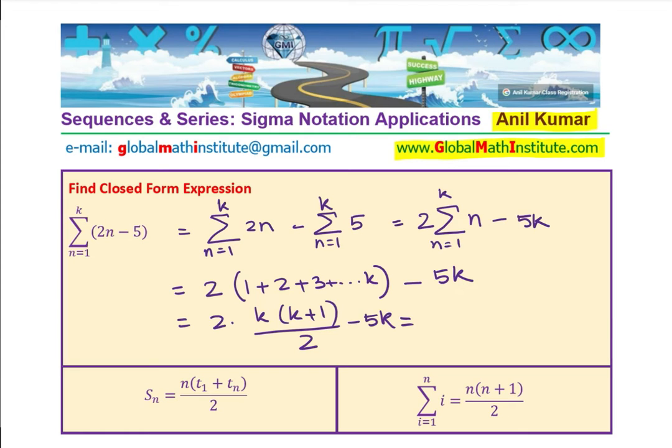Let's try to simplify this. 2 and 2 cancel. Opening the bracket, we get k squared plus k minus 5k, and this can be simplified to k squared minus 4k.